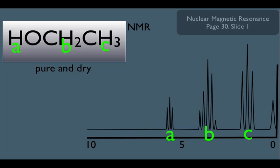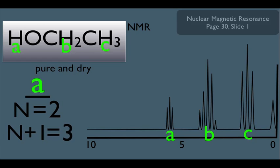Notice we have split signals here. Let's make sure we understand them. For the A-type hydrogen, let's calculate his N-value. Notice his neighboring hydrogens are the B-hydrogens, and there's two of them. So the N-value for A is 2. Using the N-plus-1 rule gives us 3, which means we should expect to see A split into a triplet.